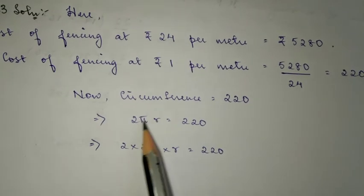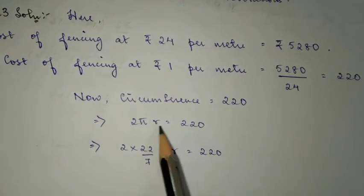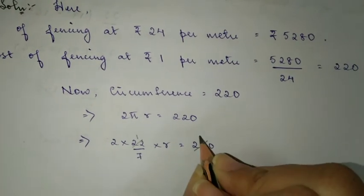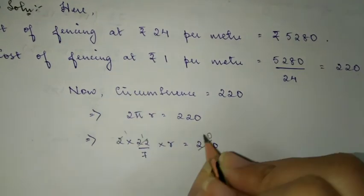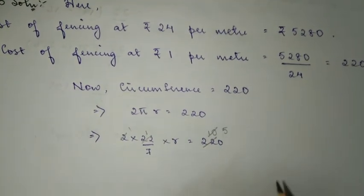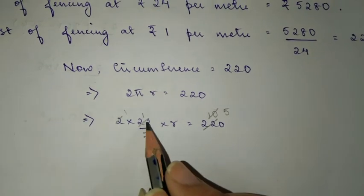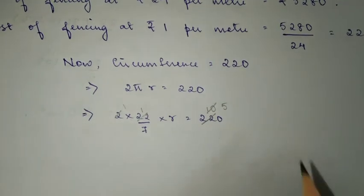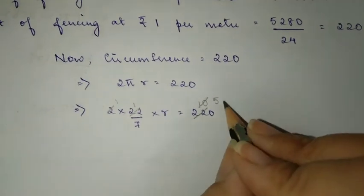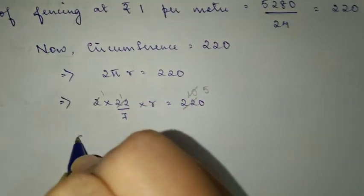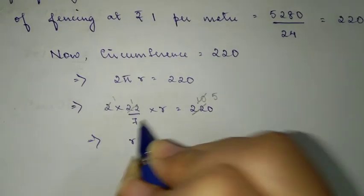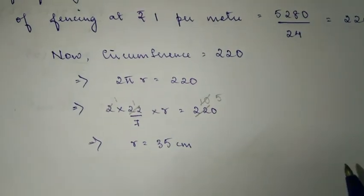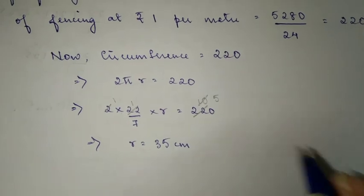Now circumference formula is 2πr, so we're going to find r using that. We can substitute 2 and 22 by 7. 22 divides this, it becomes 10 times, and 2 becomes 5 times. 7 moves to the other side and becomes multiply, hence you get r which is 7 times 5, which is 35. So you get 35 meter radius.